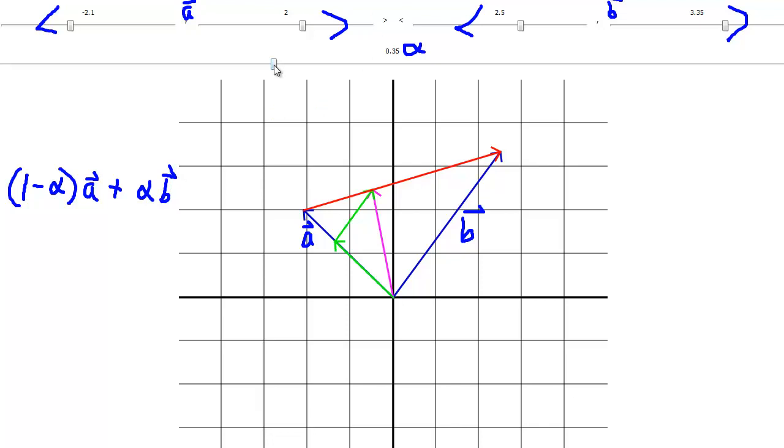Alright, our alpha. Let's do a simple alpha value. I'm going to take it to 0.25. So 1 minus 0.25 will be 0.75 times vector A.